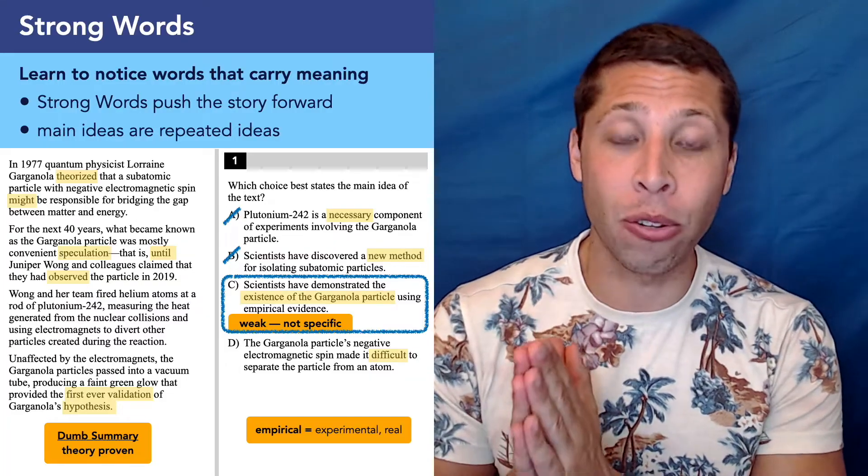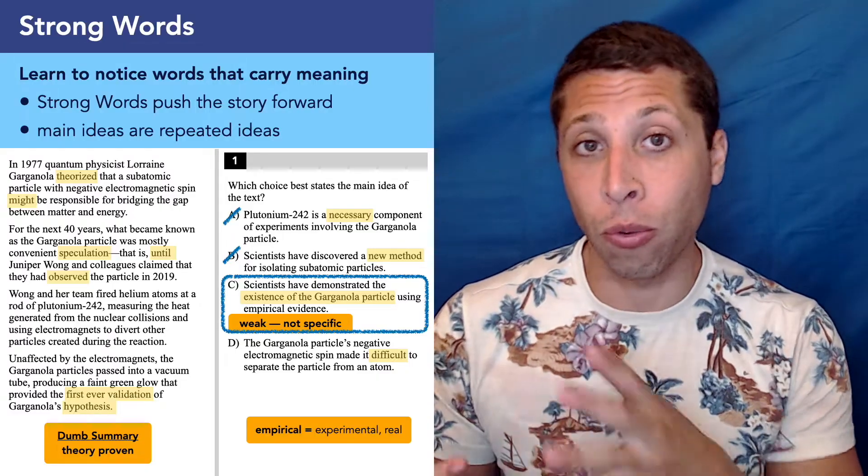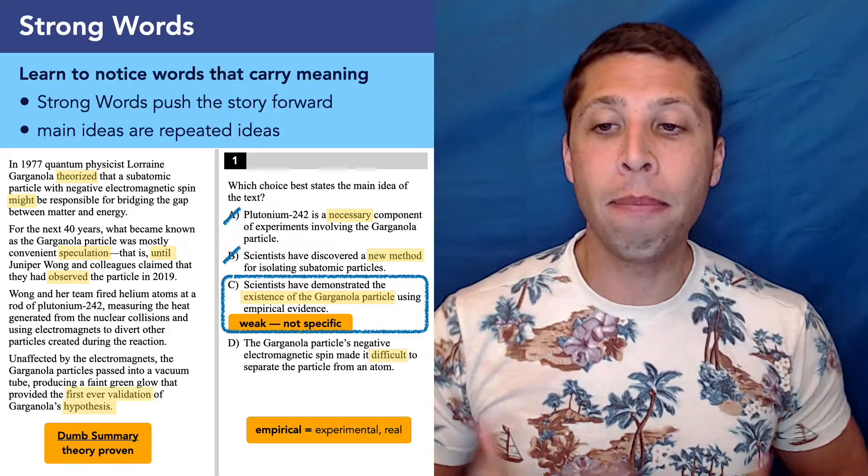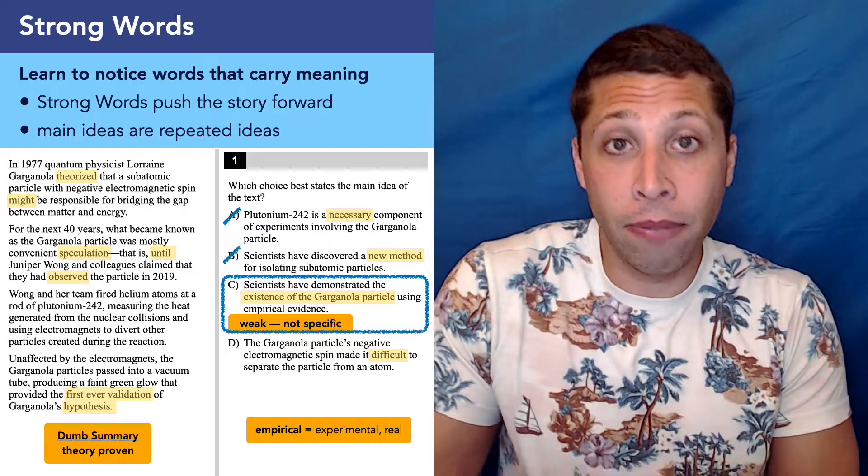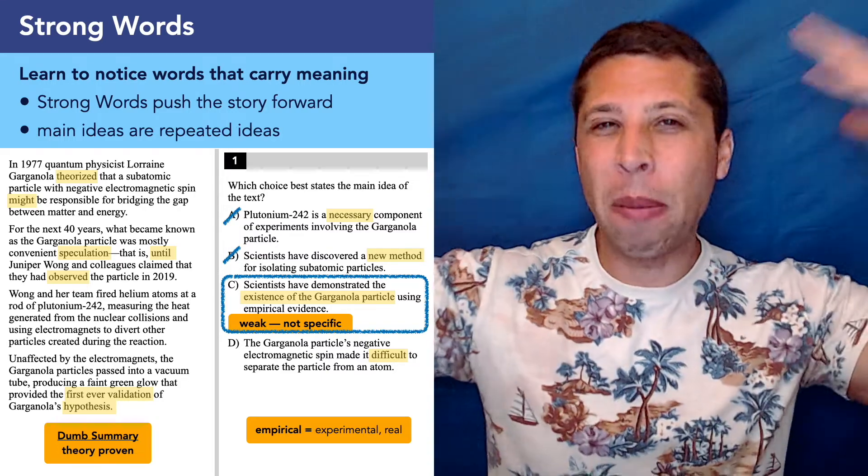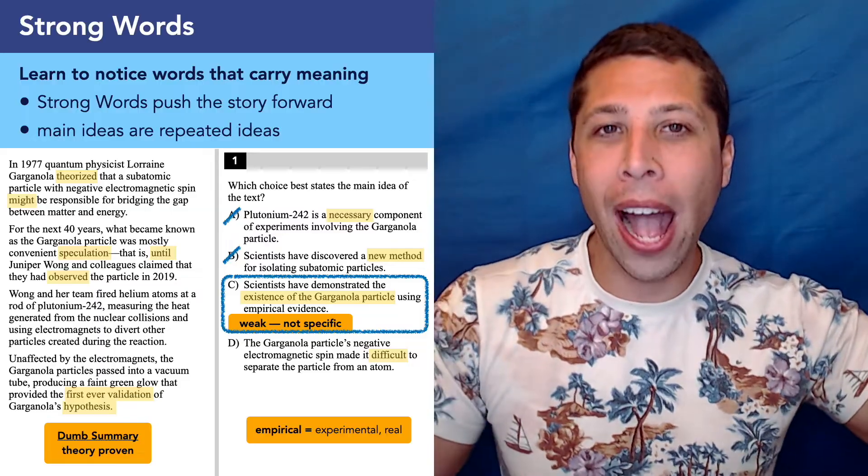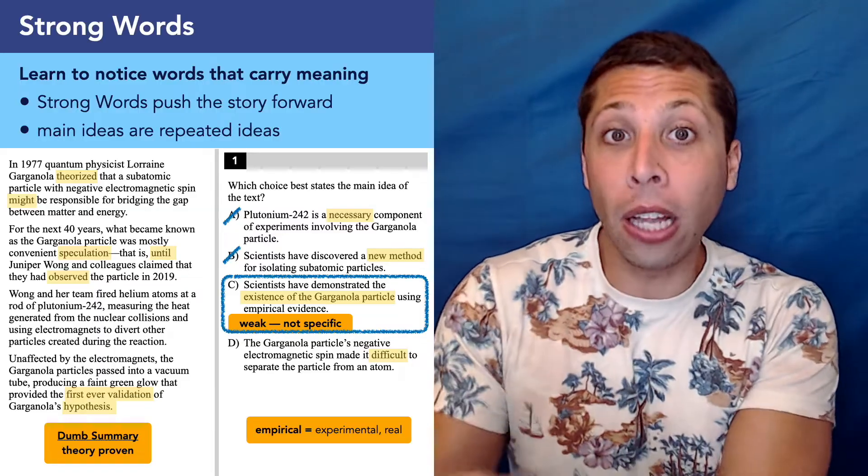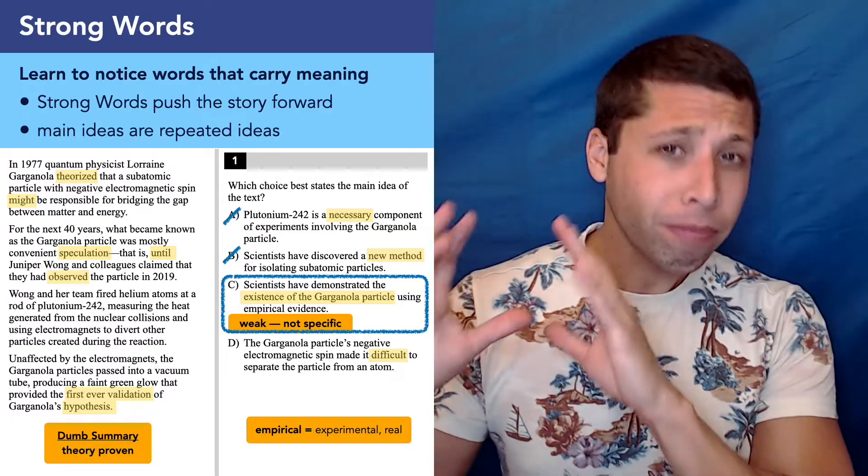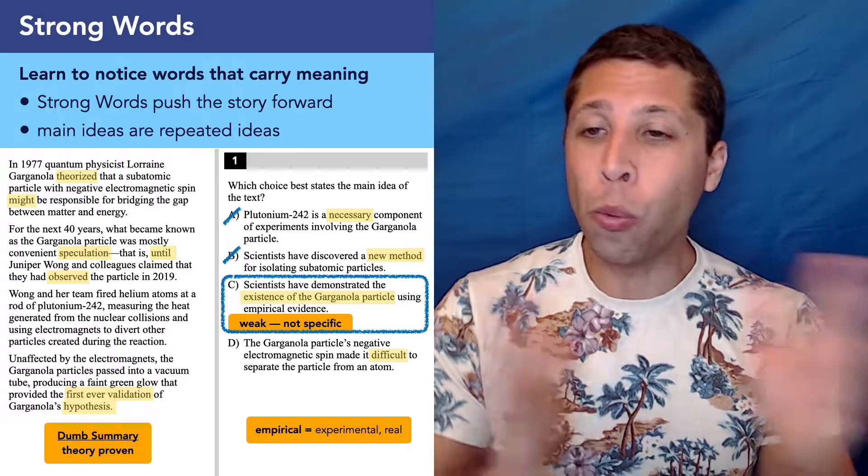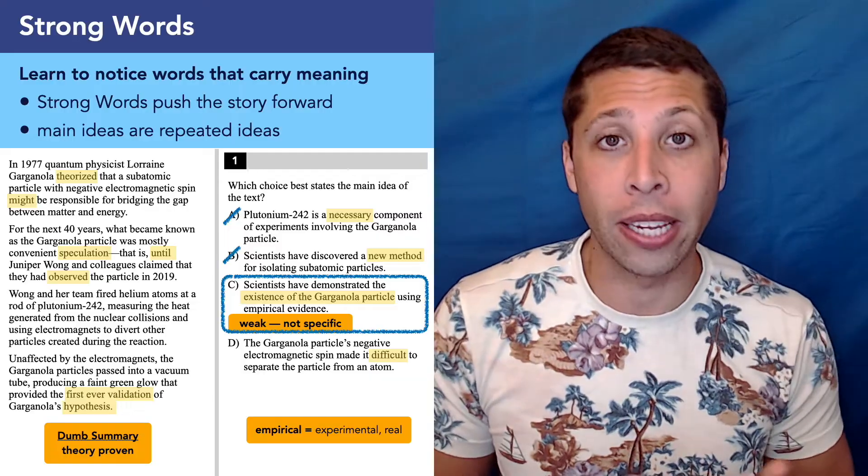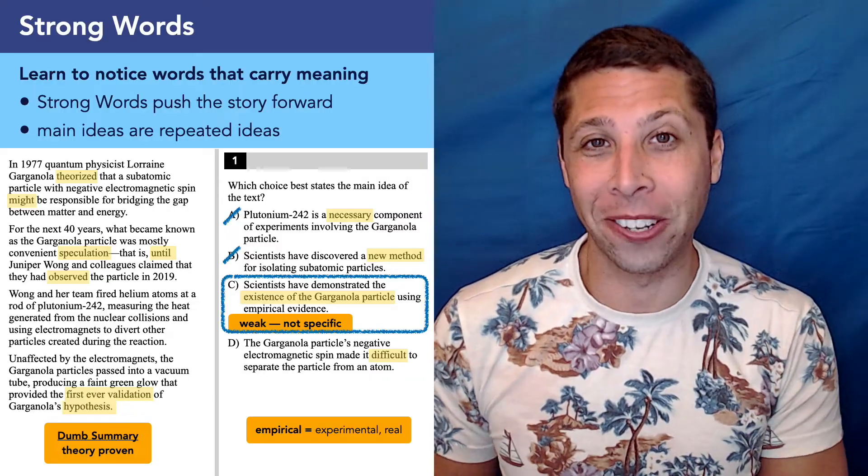And one thing you can't let slow you down is when you don't know certain words. You can't say, oh, I don't know that word, so I'm going to cross this choice out. Empirical is a tough word. It means experimental or real. It kind of fits nicely with the rest of this passage. We have this theory that's kind of maybe proven through math or something abstract, and then they're using real evidence. They can see the glow, which is real. It's touchable. It's based on fact. So that word is good to know for the SAT, but it wouldn't affect whether or not I would pick C here. It's a word I ignore because I don't know if it's strong or weak.